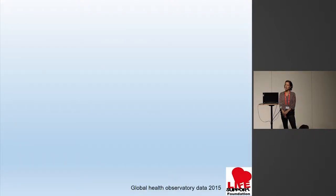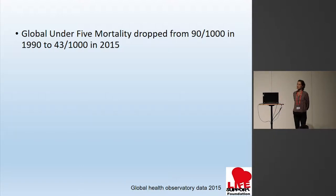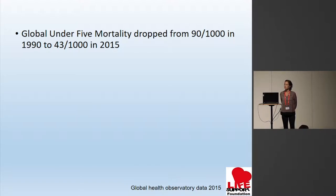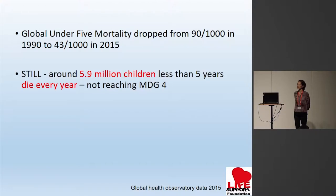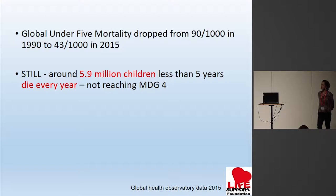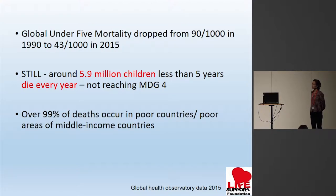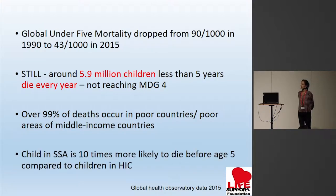Global under-five mortality has decreased. The under-five mortality dropped by 53%, from 90 to 43 per thousand, between 1990 and 2015. But still around 5.9 million children less than five years die every year. We know that these children are dying in poor countries or in the poor areas of middle-income countries. For example, a child in sub-Saharan Africa is 10 times more likely to die before the age of five compared to children in high-income countries.